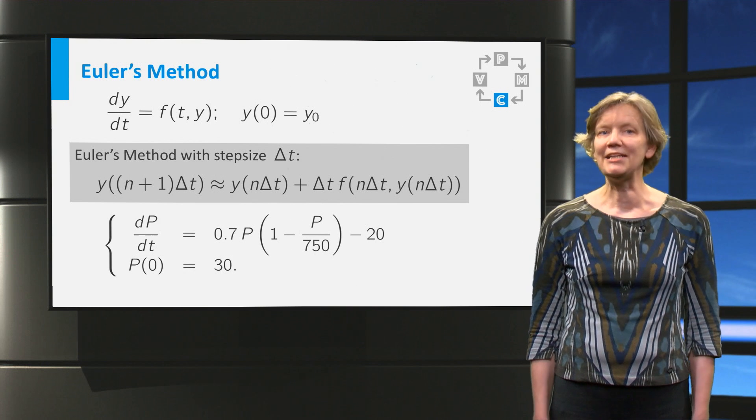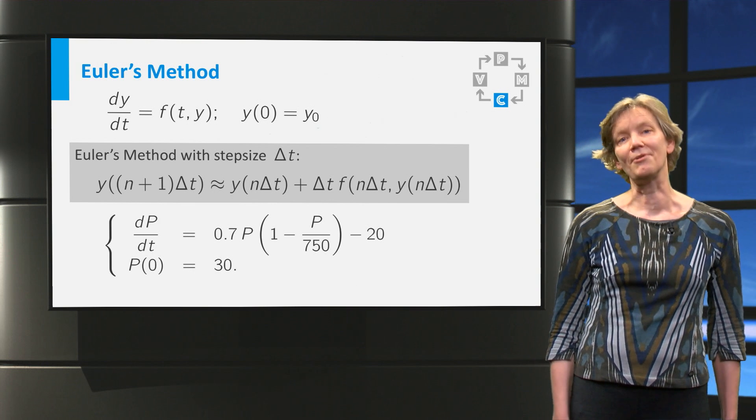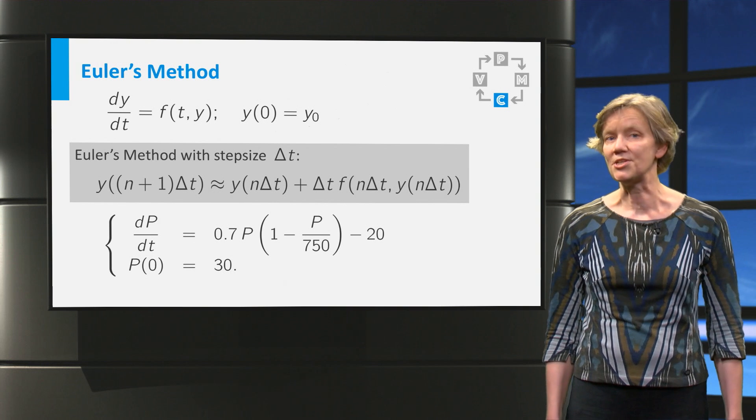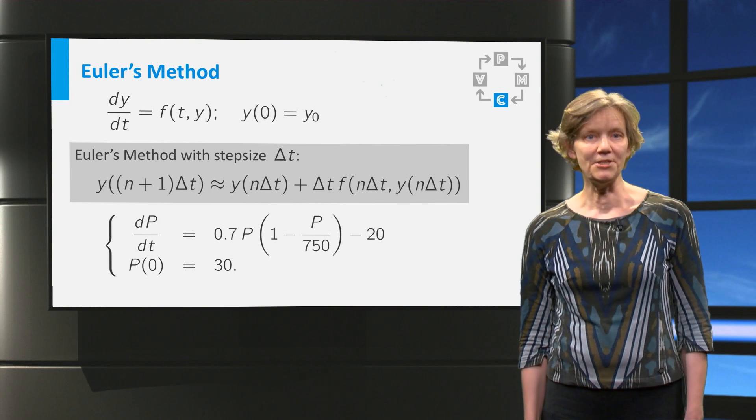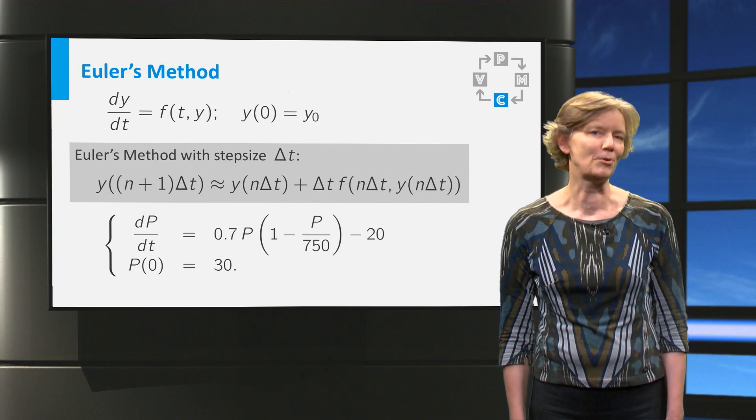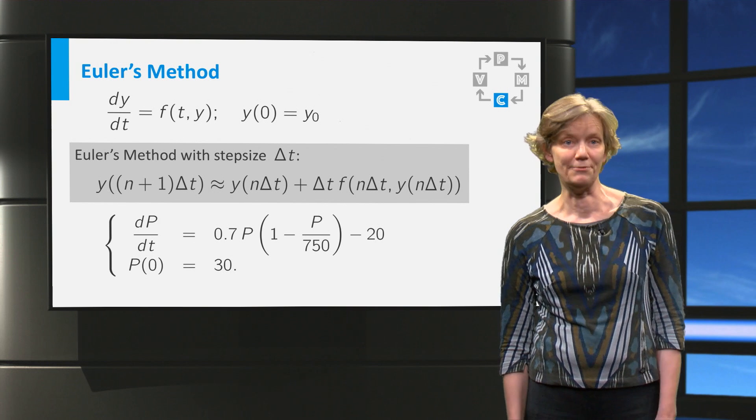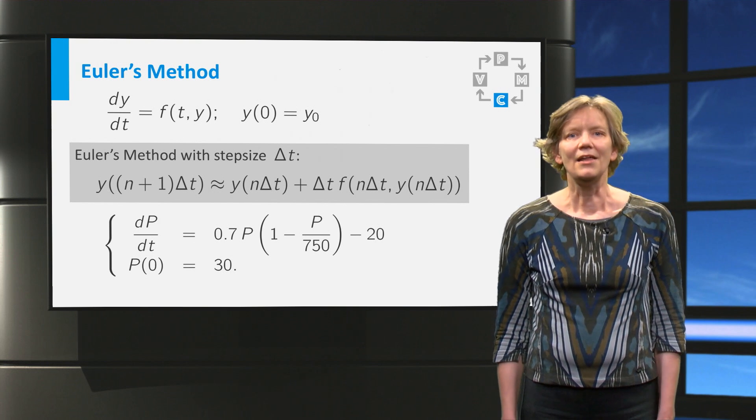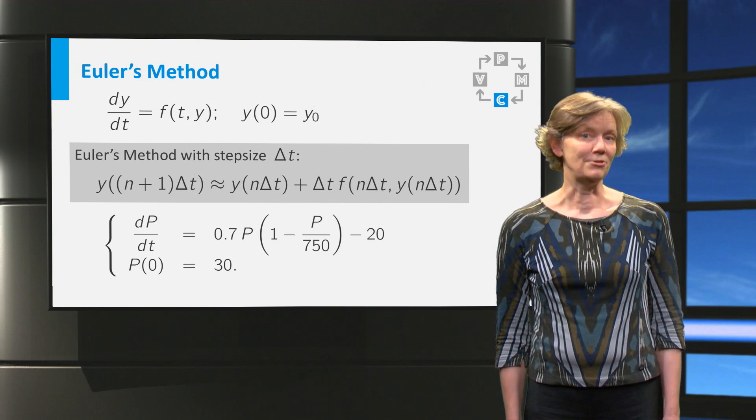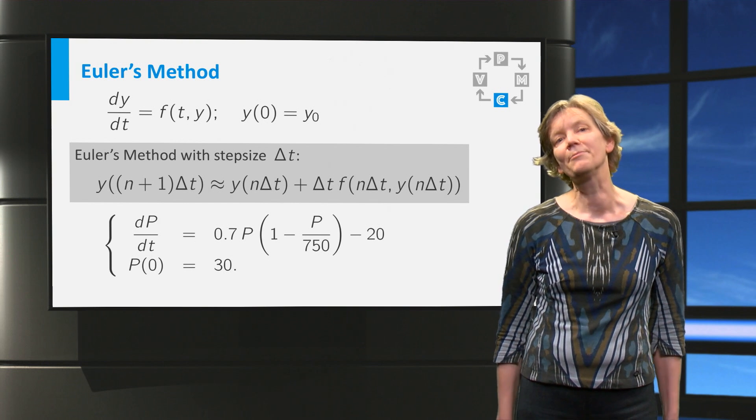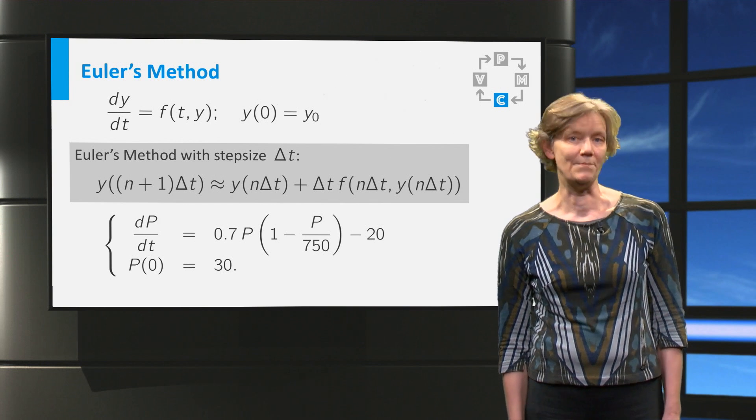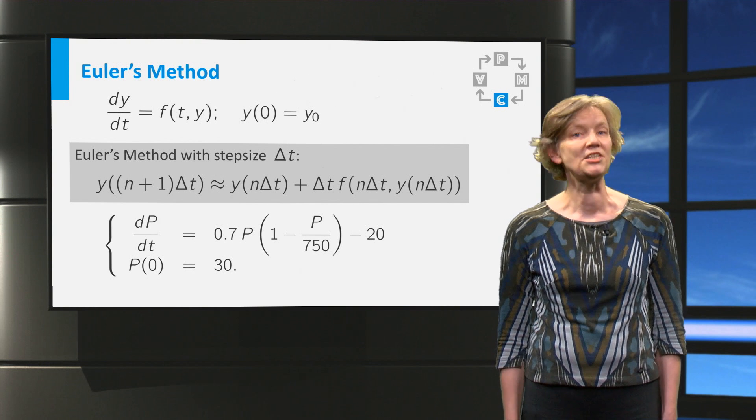We want to estimate the number of rainbow fish in our aquarium after a few months. We start with 30 fish and the mathematical model for the population size is this differential equation. The growth term is bounded and we have seen that the equilibrium value of approximately 720 fish is stable.